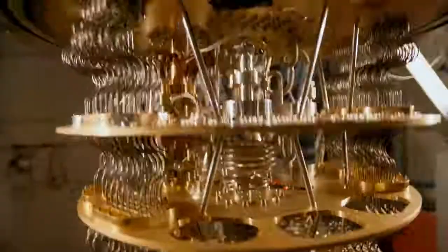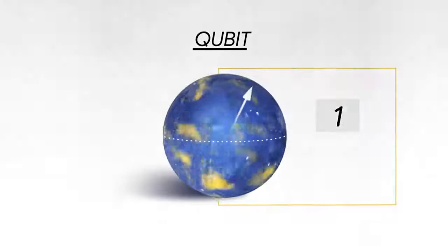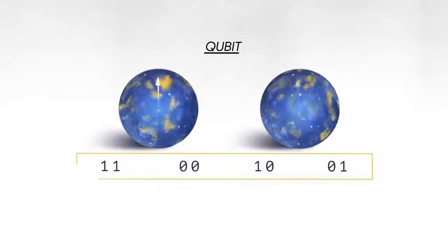The classical bit stores information as a zero or one, and a quantum bit can be both zero and one at the same time. If you have two quantum bits then there are four possible states that you can put in superposition. With three qubits it's eight, four qubits it's 16, it grows exponentially.